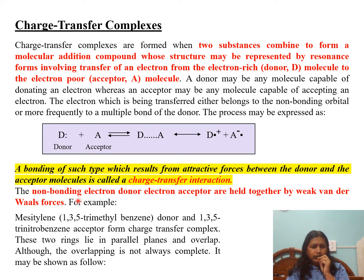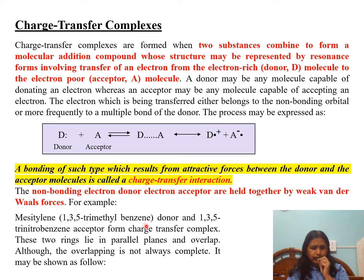The non-bonding electron donor and electron acceptor are held together by weak van der Waals forces. The force of attraction between the donor and the acceptor is these weak van der Waals forces.